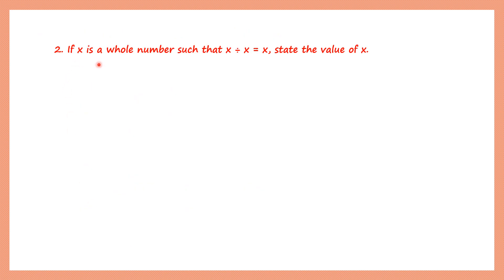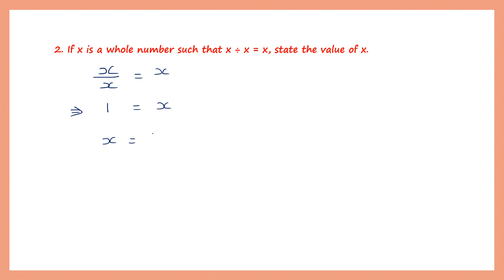Question 2: if x is a whole number such that x divided by x equals x, what is the value of x? We learned that when you divide a whole number by itself, you get 1. So x divided by x equals 1, and this equals x. Therefore x equals 1.